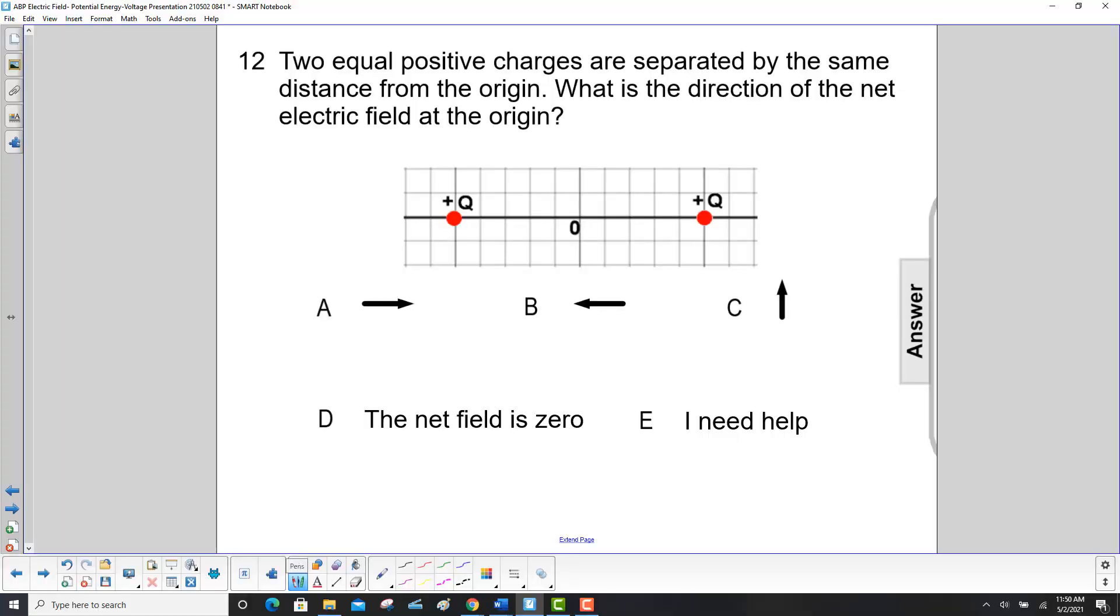Two equal positive charges are separated by the same distance from the origin. What is the direction of the net electric field?